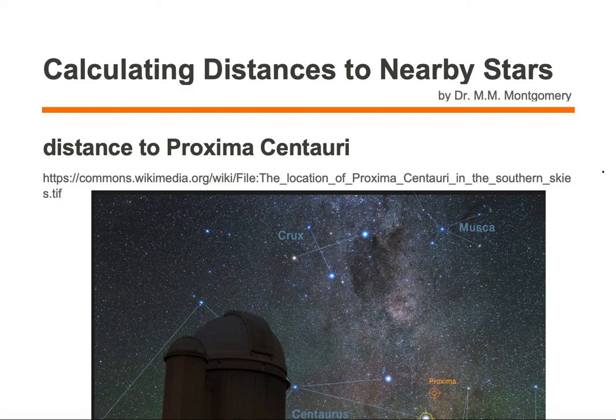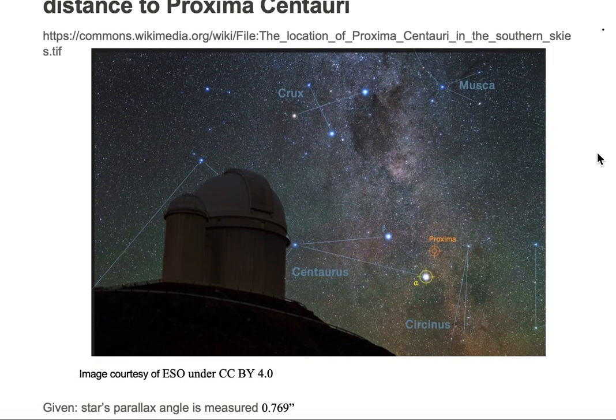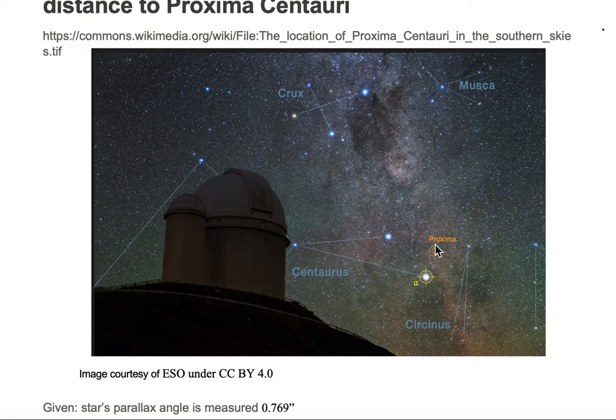We would like to calculate distances to nearby stars, such as Proxima Centauri. Here we're looking at Proxima Centauri in the southern sky, courtesy of ESO. There it is with the crosshairs.